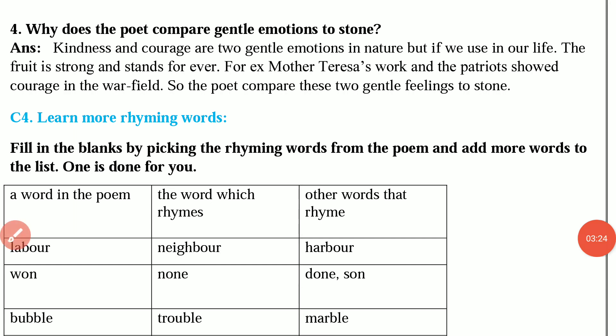Question number 4 is, why does the poet compare gentle emotion to stone? The answer is, kindness and courage are two gentle emotions in nature. But if we use them in our life, the fruit is strong and stands forever. For example, Mother Teresa's work and patriots who showed courage in the war field. So the poet compares these two gentle feelings to stone.